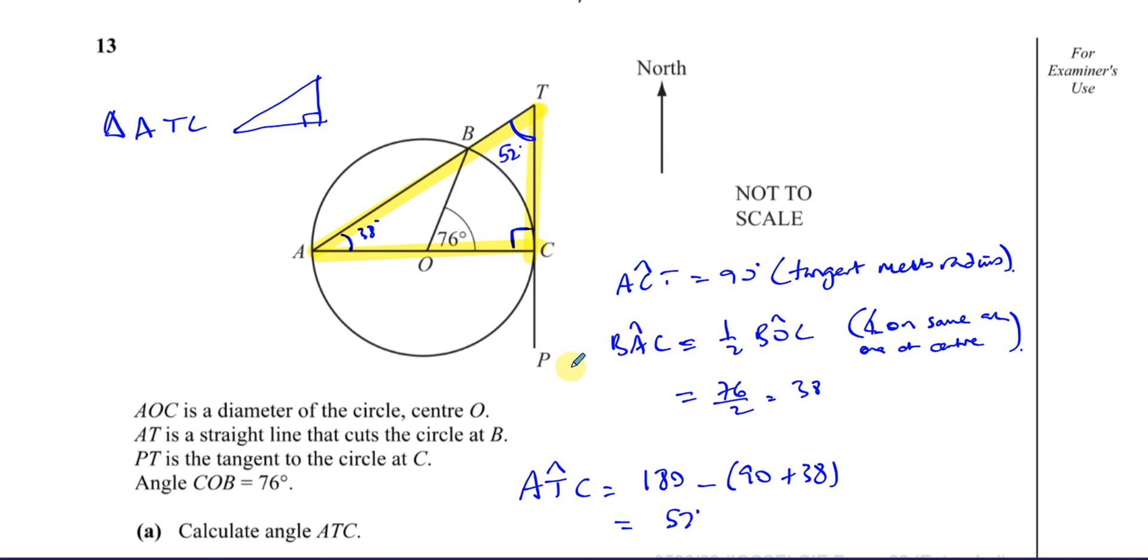So that's one way of finding that angle is 52. I could have also found it in another way, and I'm going to show you the other way as well. I could have done this. I could have said, okay, I know that this is 90 degrees, as we just determined. Tangent meets radius.